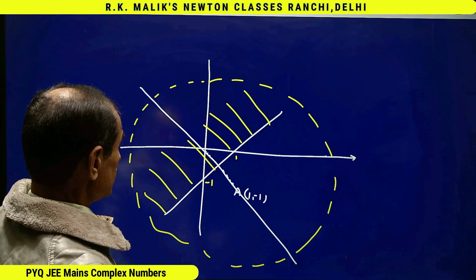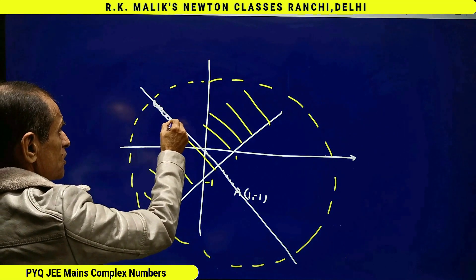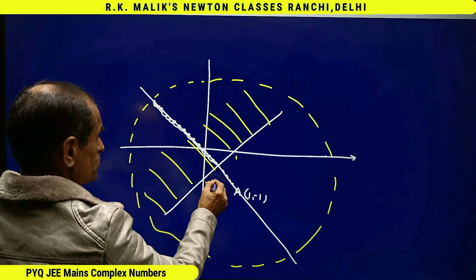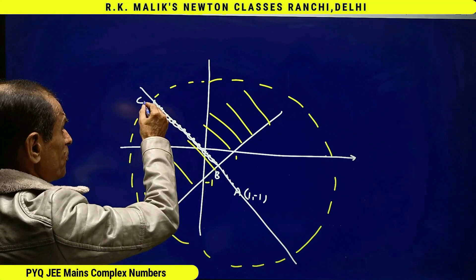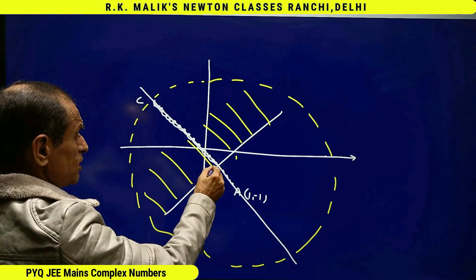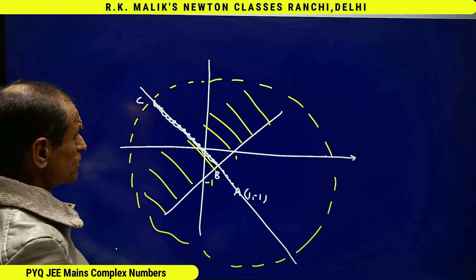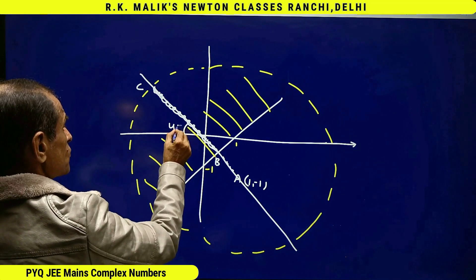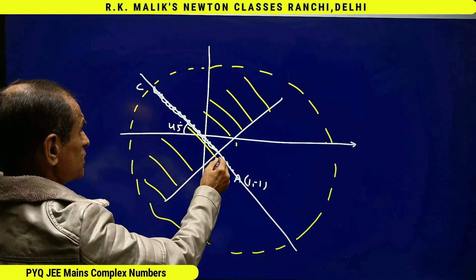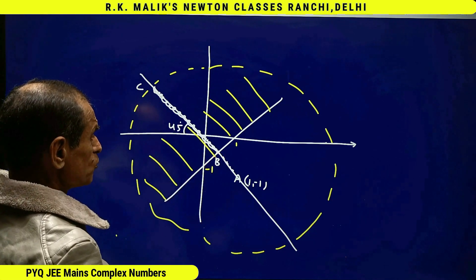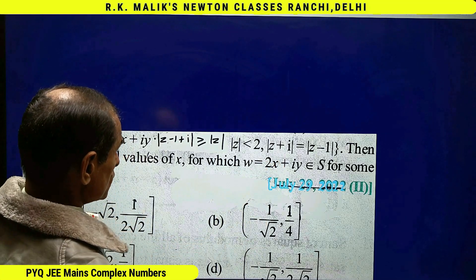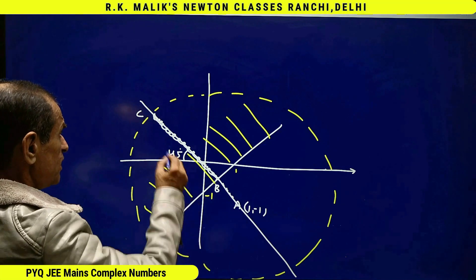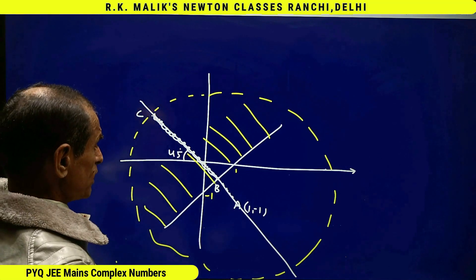It is clear that all complex numbers lying on this line segment — call this point B and this point C — all complex numbers lying on line segment BC, including B and excluding C, satisfy all three given conditions. Clearly, this angle is 45 degrees. Out of all these complex numbers, the real part 2x is greatest at one endpoint and least at the other endpoint.